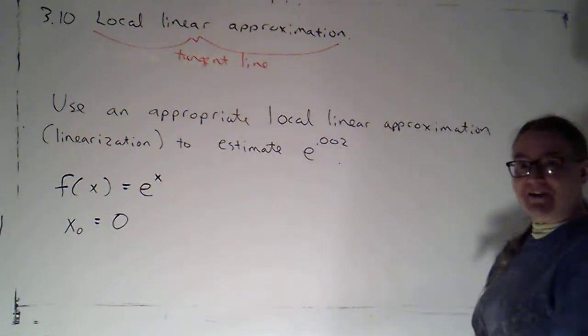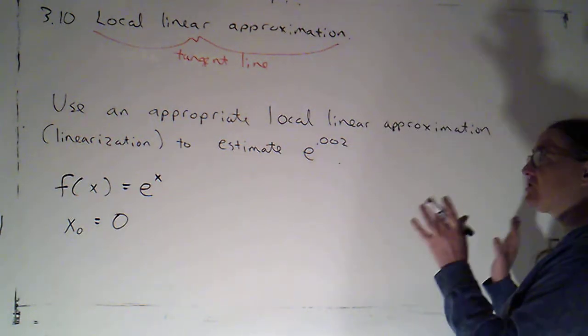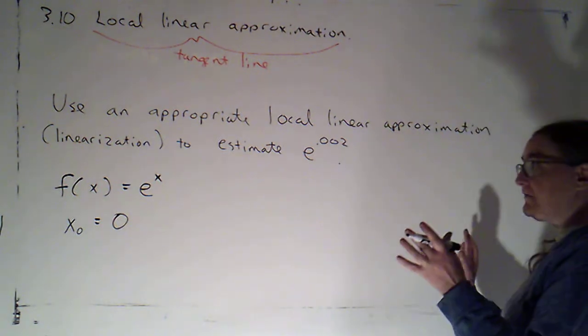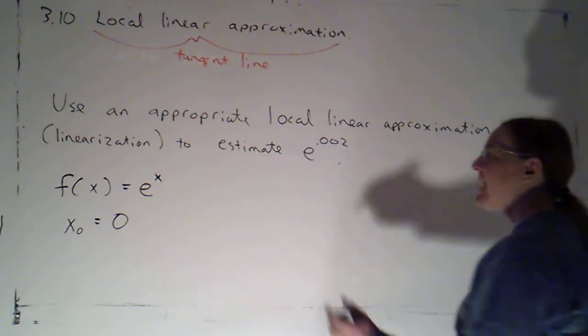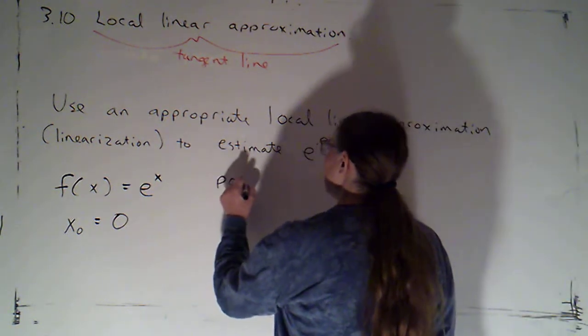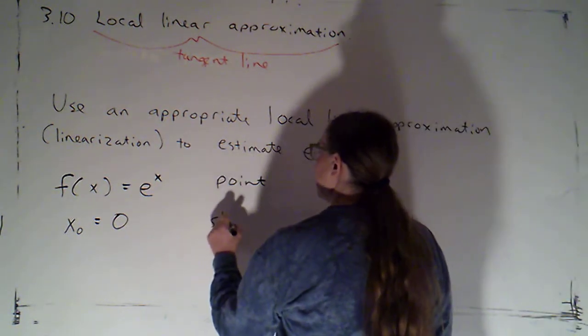So that I think is actually the hardest part of the problem, just translating it into what function's tangent line are we finding and what's the point of tangency. So now I know I just need two things: I need a point and I need the slope.